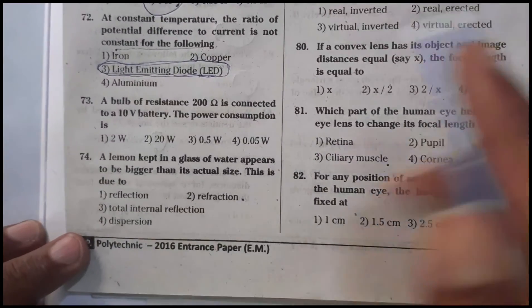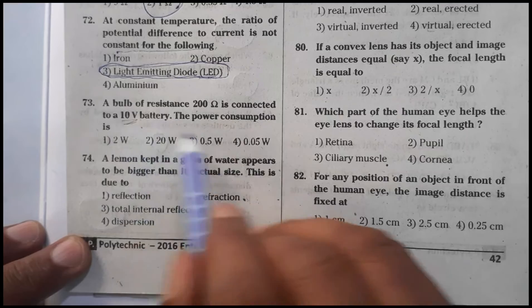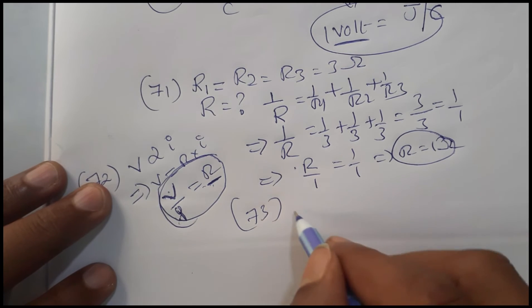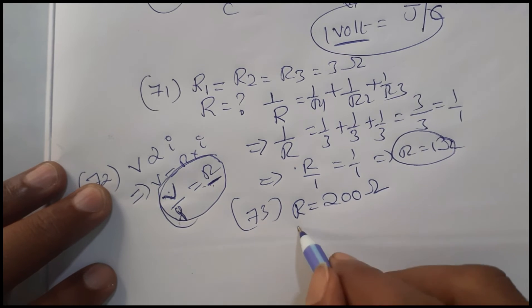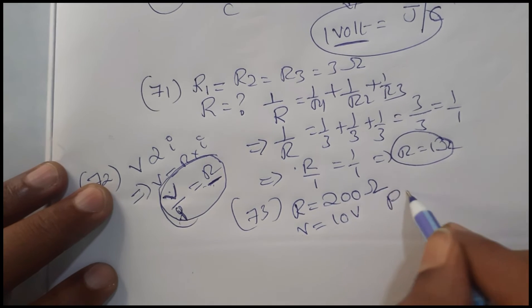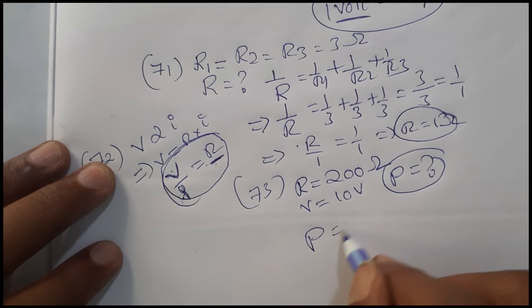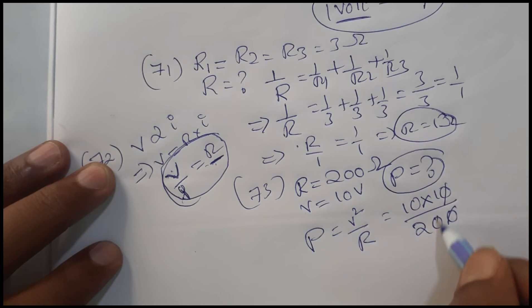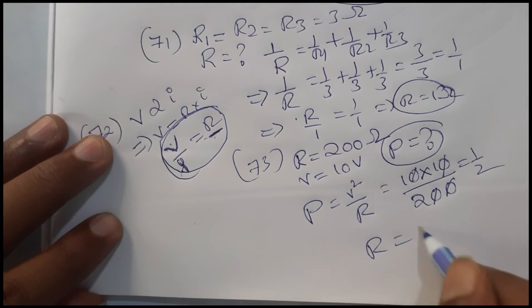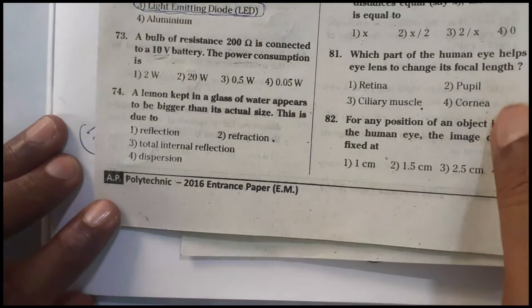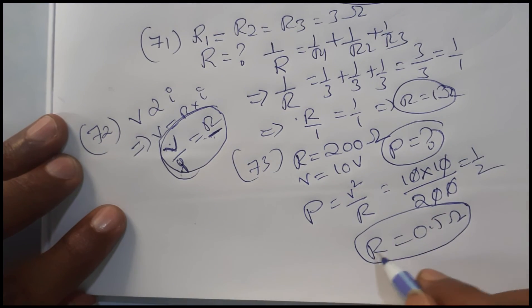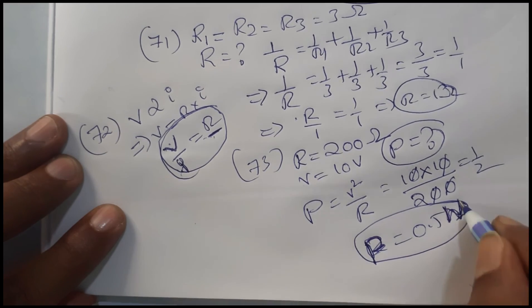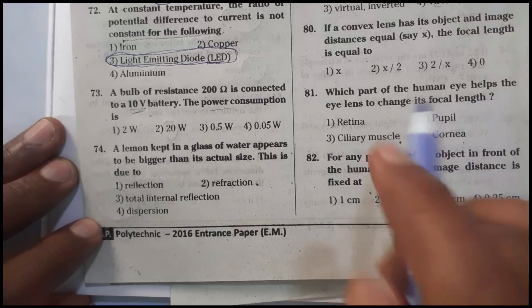Question 73: A bulb of resistance 200 ohms is connected to a 10-volt battery — what is the power consumption? Using the formula P equals V squared by R, we get P equals 10 squared divided by 200, which equals 100 divided by 200, giving P equals 0.5 watts.